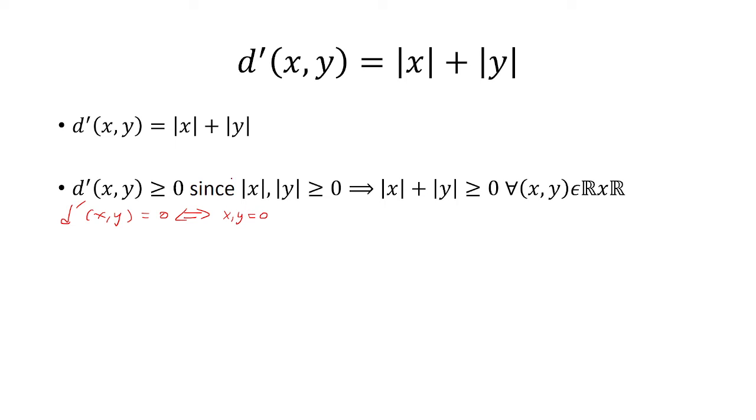That's obvious since if d' of x, y is 0, then we have absolute value of x plus absolute value of y equals 0. And so since they're both greater than or equal to 0, then the only solution here is x and y being 0. So the first condition is met.